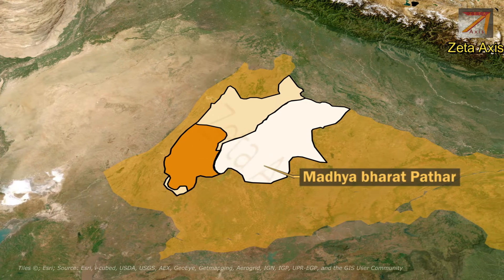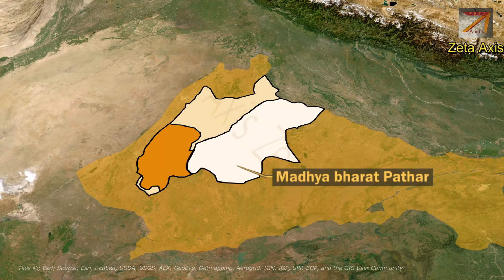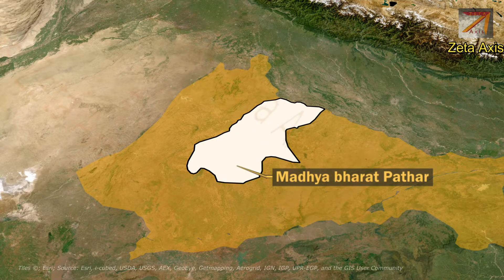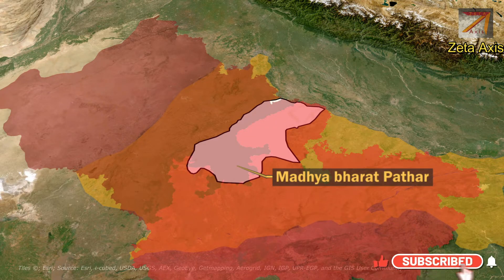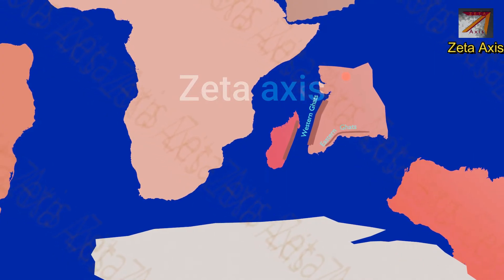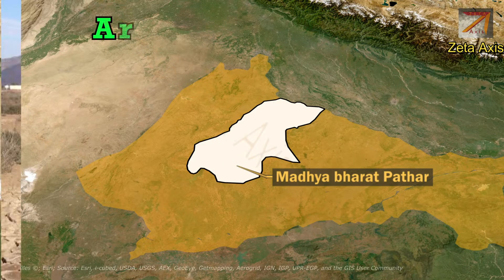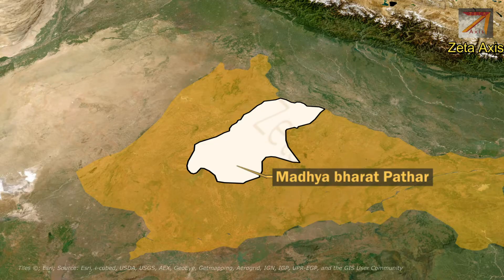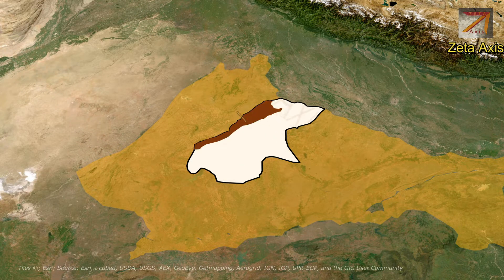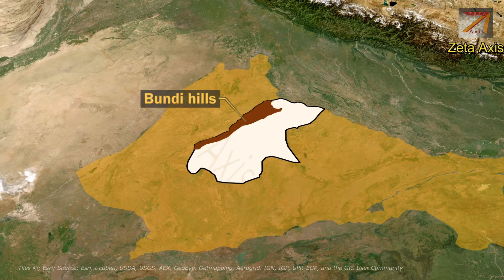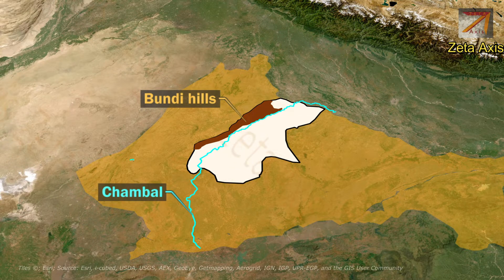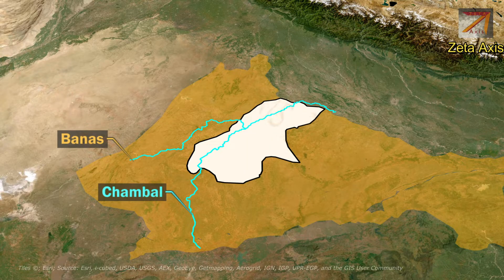The next plateau is Madhya Bharat Pathar, or Central Highlands — not to be confused with the Northern Peninsula plateau which is also called Central Highlands. Madhya Bharat Pathar is located mainly in Rajasthan and Madhya Pradesh, with some extensions in Uttar Pradesh. The base rock is made of basalt from lava eruptions that occurred when the Indian plate passed over the Reunion Island hotspot. The climate is mainly arid with very low rainfall. The Chambal River flows through Madhya Bharat Plateau along with its tributaries like Ban Ganga, Parvati, and Kalisin. On the northwestern margin we find Boondi Hills, which form the margin between East Rajasthan Uplands and Madhya Bharat Pathar.